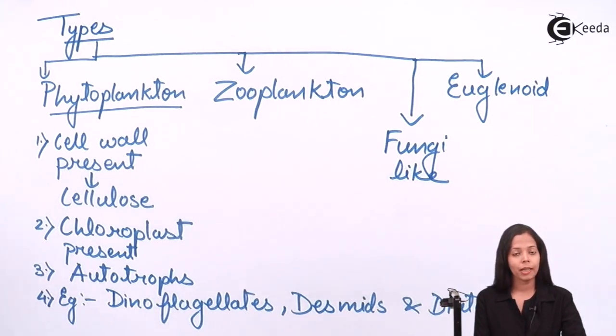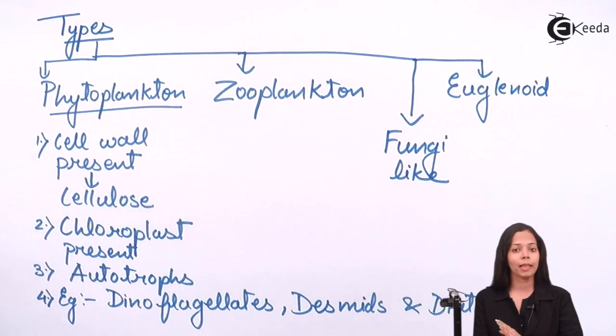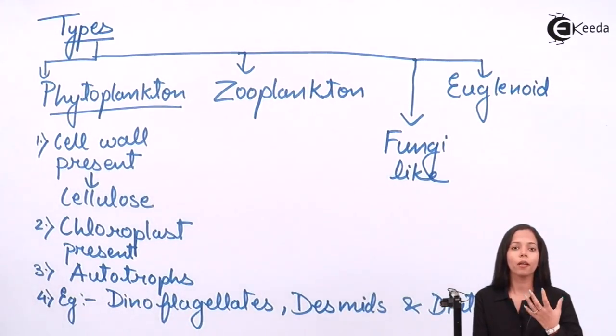Next point: chloroplast present in phytoplanktons. In case of zooplanktons, chloroplast is absent. If chloroplast is absent, are they autotrophic or heterotrophic? They are heterotrophic because chloroplast is absent and they cannot prepare their own food. Last point: are they motile or non-motile? They are motile because they are animal-like protists. I will explain later how they move.